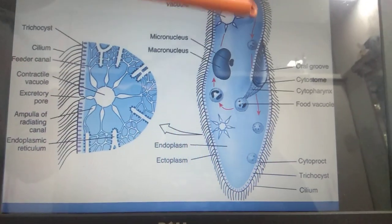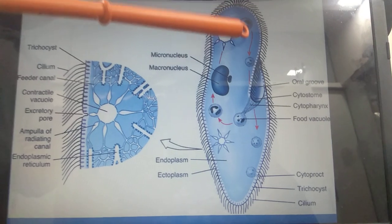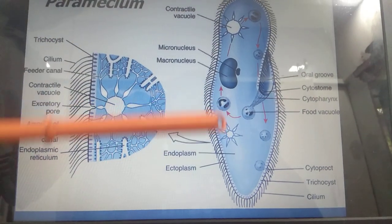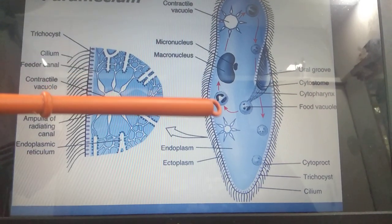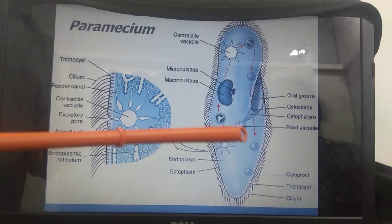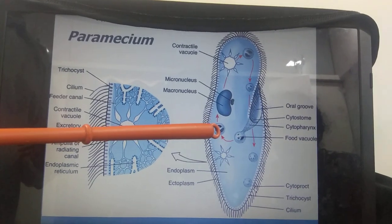Small vesicles are scattered in the endoplasm. These small vesicles are called food vacuoles, which perform the function of storing food material.